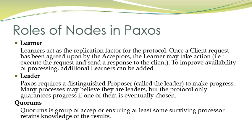There is also a leader, which is a distinguished proposer required to make progress. Many processors may believe they are the leader, but the protocol only guarantees progress if one of them is eventually chosen. A quorum is a group of acceptors. Whatever value is proposed by the proposer, it goes to all acceptors in the quorum. If all acceptors in the quorum accept that value, then the state of the system is finalized in the Paxos protocol.